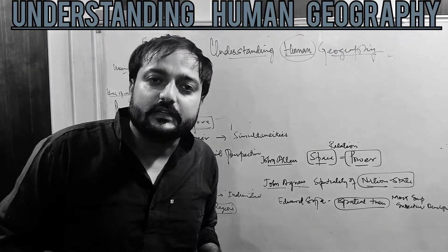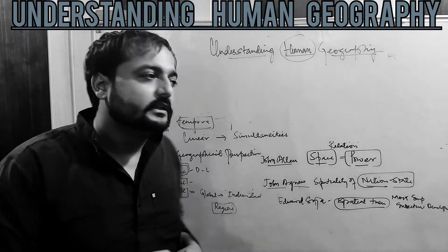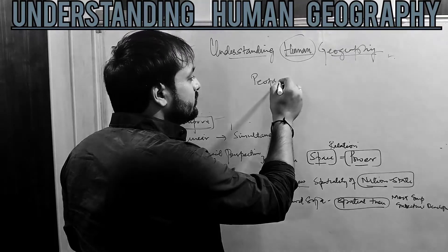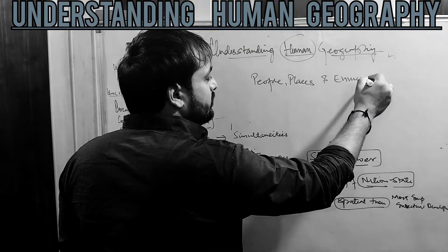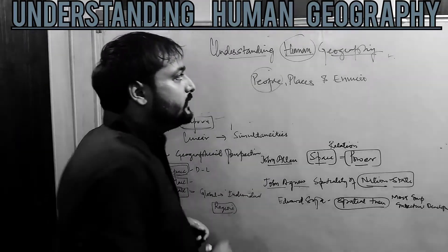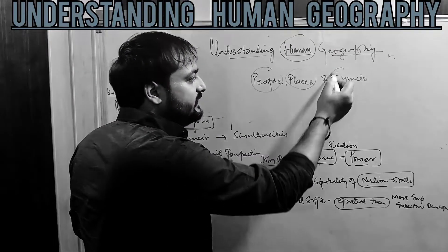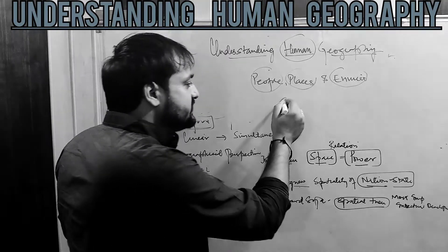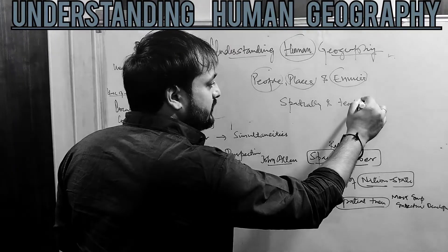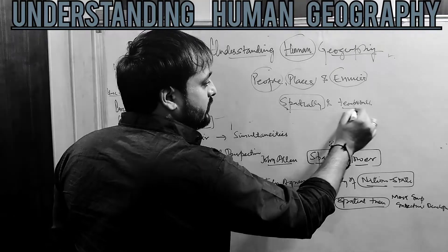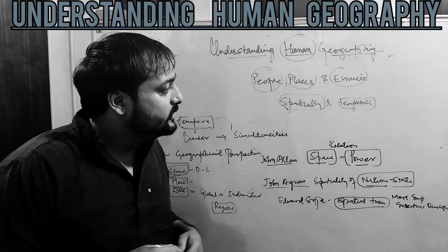So what is human geography? Human geography studies the interrelationship between the people, places, and the environment, which varies spatially and temporally across and between locations.